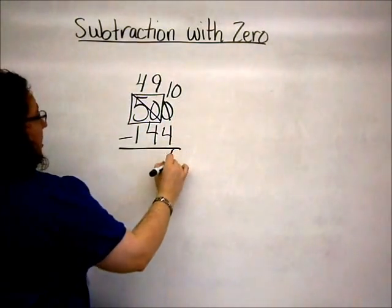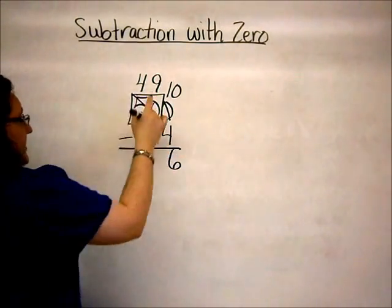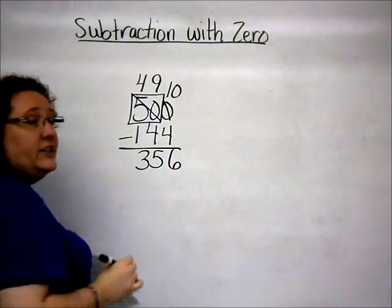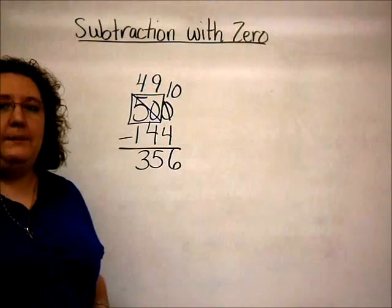Now I can subtract all the way across. Ten minus four is six, nine minus four is five, and four minus one is three.